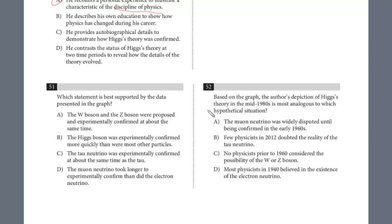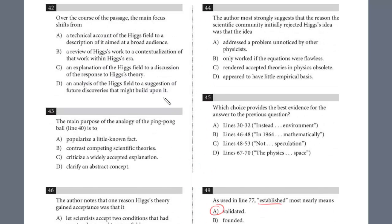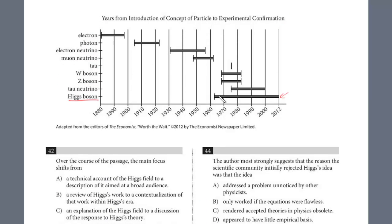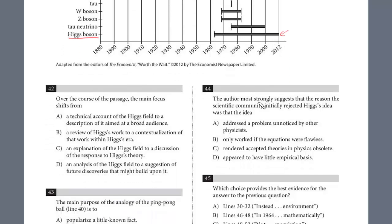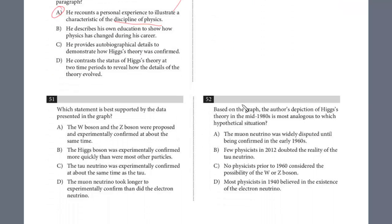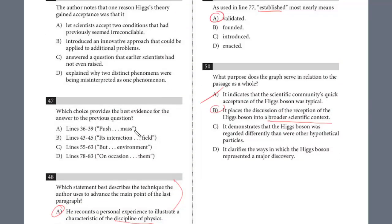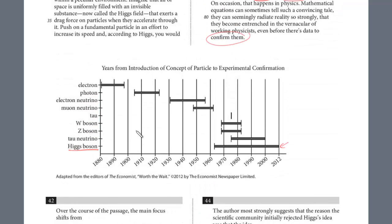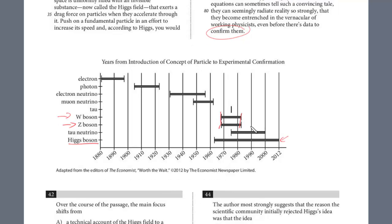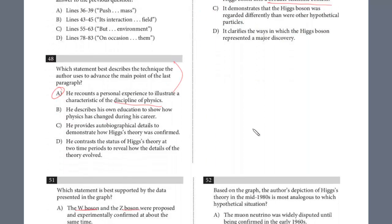All right, last two questions, 51 and 2. Which statement is best supported by the data in the graph? So let's take a look at the graph again, and then we'll look at the answer. So again, the data in the graph, different time periods from when it was first introduced to when it was accepted. You kind of have to cull through these to find the answer. Let's take a look at A. The W boson and the Z boson were proposed and experimentally confirmed about the same time. So let's just check to see if that's right. W and Z proposed and confirmed about the same time. All right. So here's the W. Here's the Z. Introduced. Well, confirmed. That definitely is right. We can just stop right there. That is definitely right. Introduced and confirmed at the same time. So the answer is A for 51.